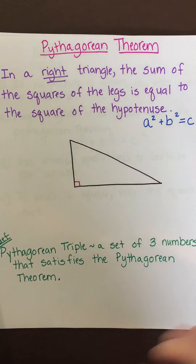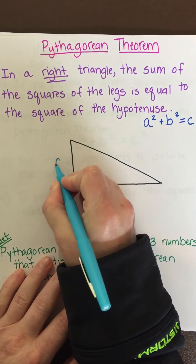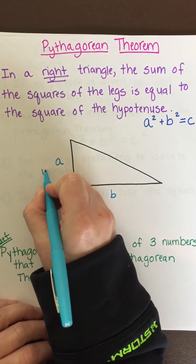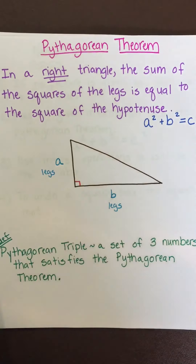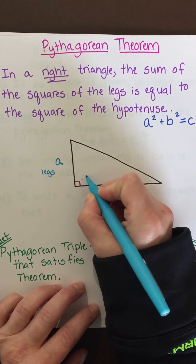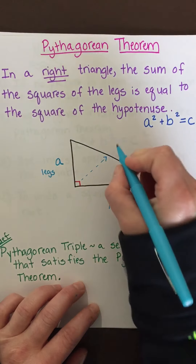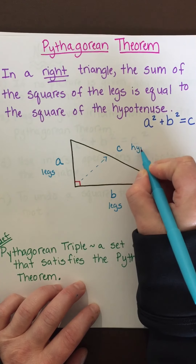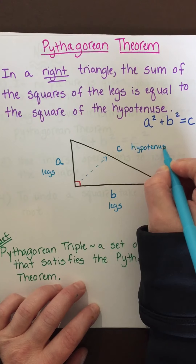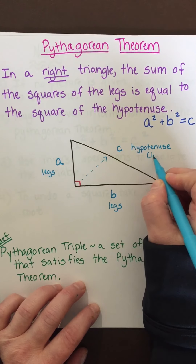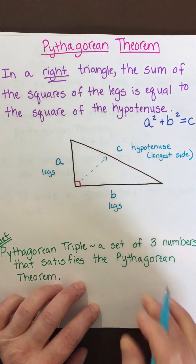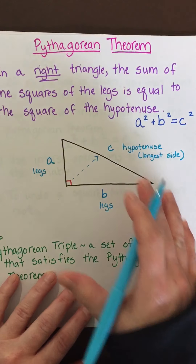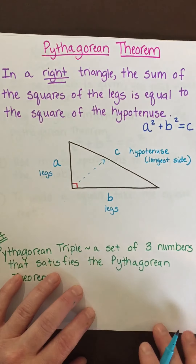I have a right triangle drawn here. I'll call the two legs a and b — they're interchangeable, it doesn't matter which leg is a and which is b. The side directly across from the right angle is c, which is your hypotenuse. The hypotenuse is always the longest side.